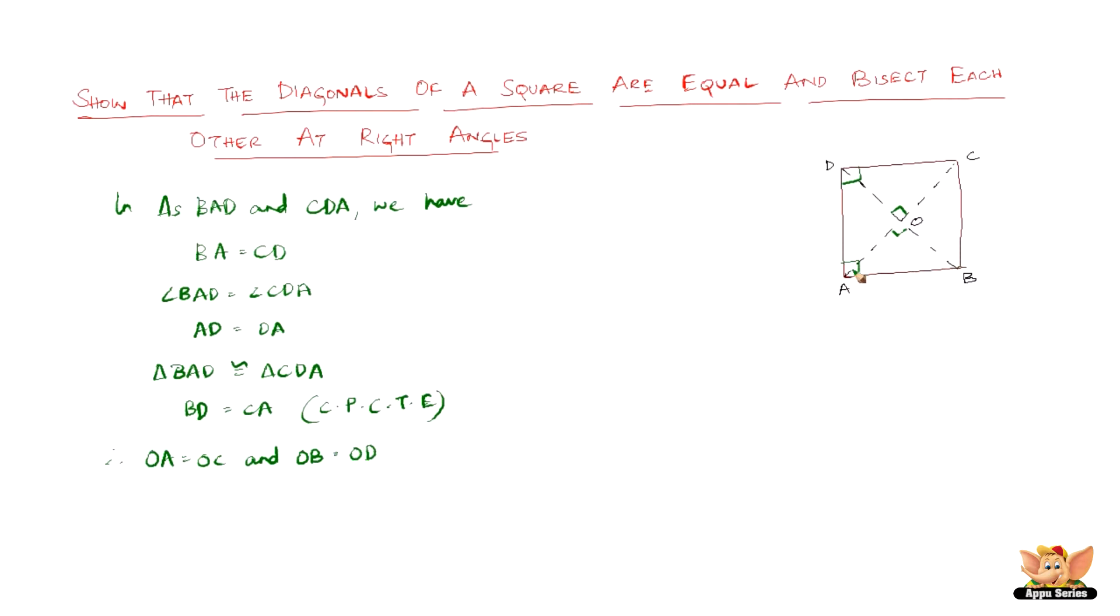Now consider triangles AOB and COB. Now in these triangles we have AB equals CB because all the four sides of a square are equal. And we also have OB equals OB because both the triangles share the common side. And then we have OA equals OC. We just proved here.